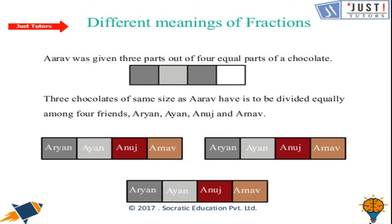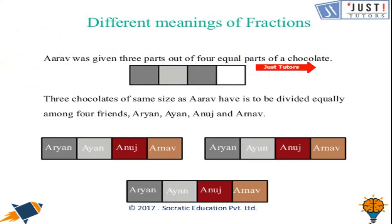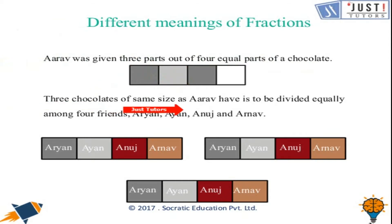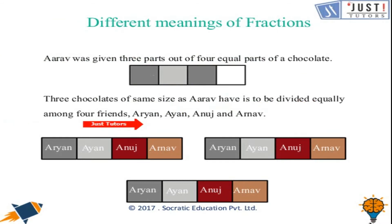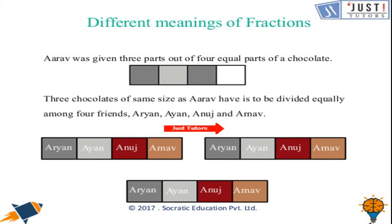Now let's look at a different meaning of fraction. Arav was given three parts out of four equal parts of a chocolate — the colored part was given to Arav. Now three chocolates of the same size are to be divided equally among four friends: Arav, Ayaan, Anosh, and Arnav. There are three chocolates to distribute between four people.